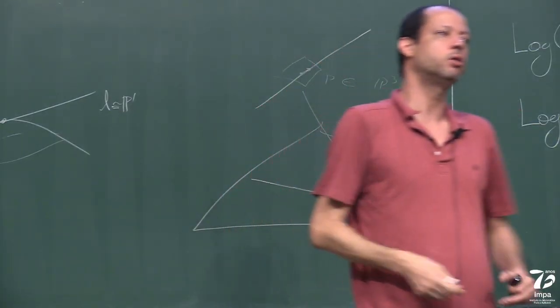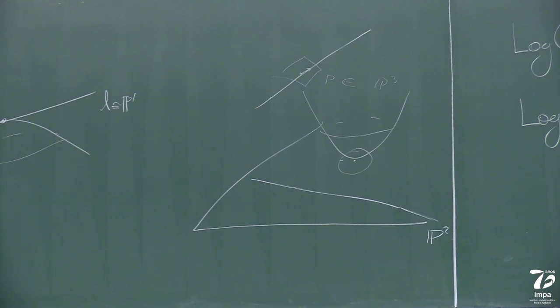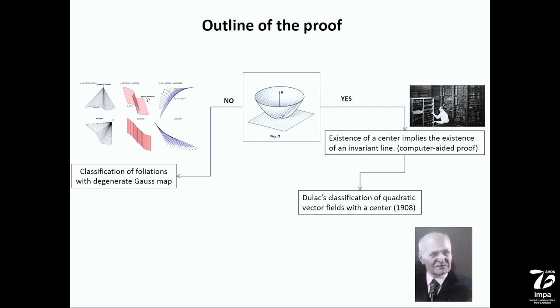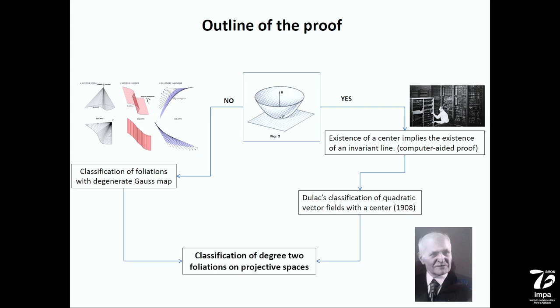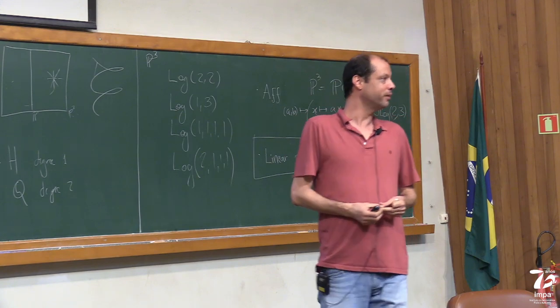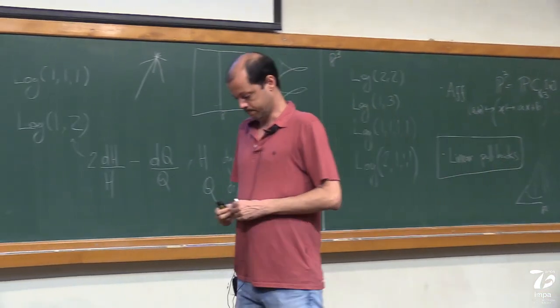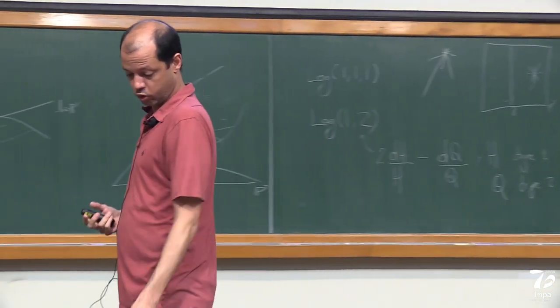Since this computer-verified fact is established, they can use the classification of quadratic vector fields — affine quadratic vector fields — and combining these two ideas they reach the complete irreducible classification of degree-two foliations. It is a very nice result, showing among other things the power of extrinsic differential geometry. They exploit the Gauss map and its properties to describe the foliations of degree two.